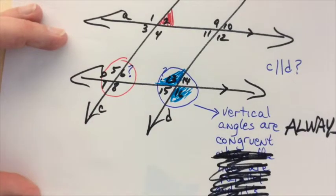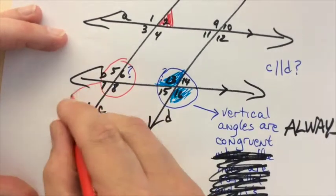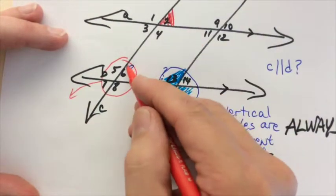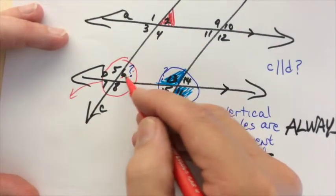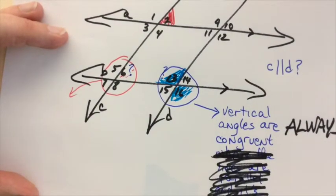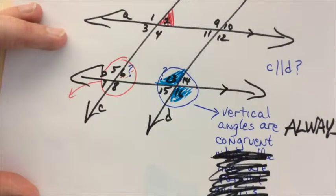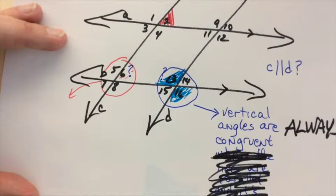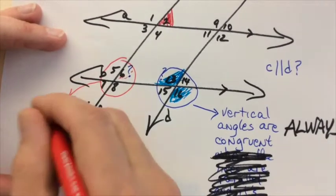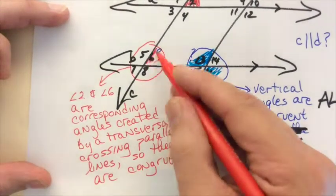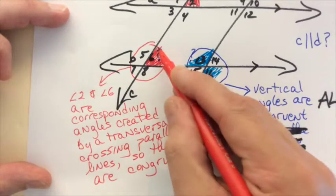Corresponding angles. What about them? I want to know 6, right? So how am I going to find it out? 6 and 2. Why? Corresponding angles. And they're in the same depth. It's the parallel ones. Angle 2 and angle 6 are corresponding angles created by a transversal crossing parallel lines so they are congruent.